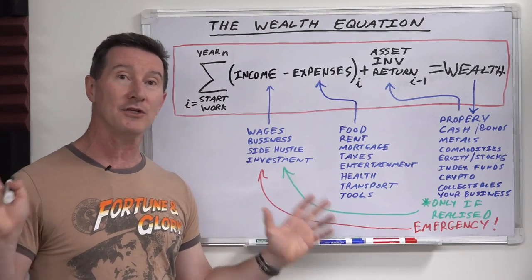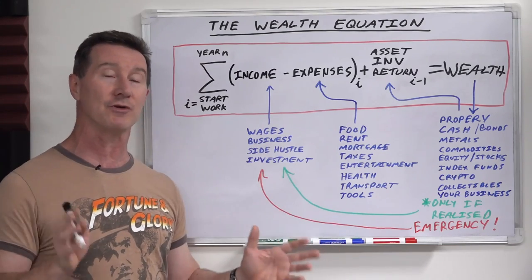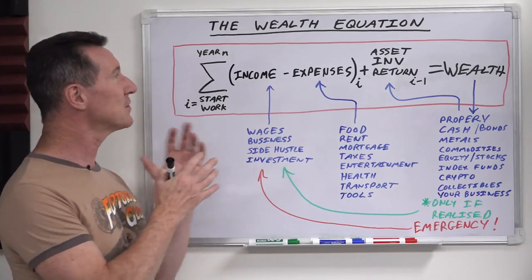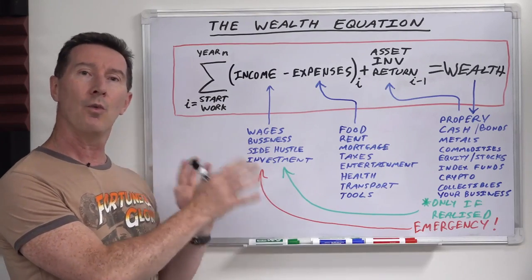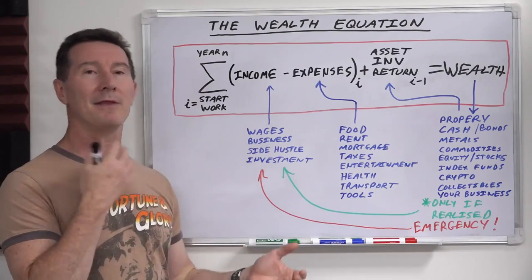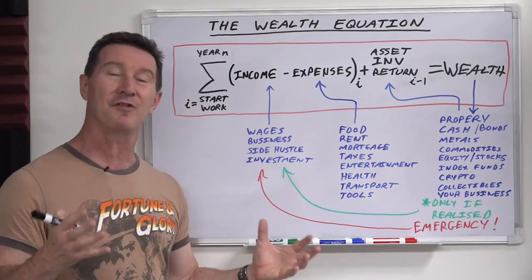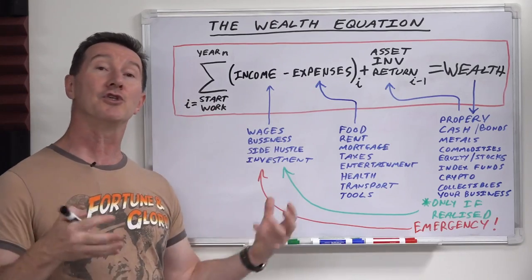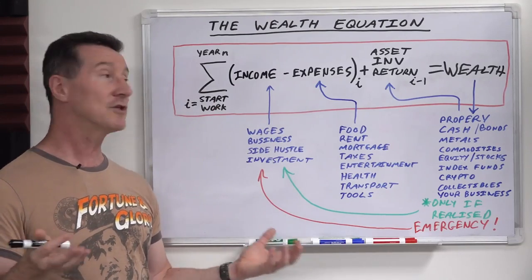That doesn't mean you're super rich and you can afford your own private island, a luxury yacht and everything else. This is an almost guaranteed way to do it for most people. There's bad fortune and bad circumstances in life, but if you follow this basic formula, you should accumulate wealth over time.